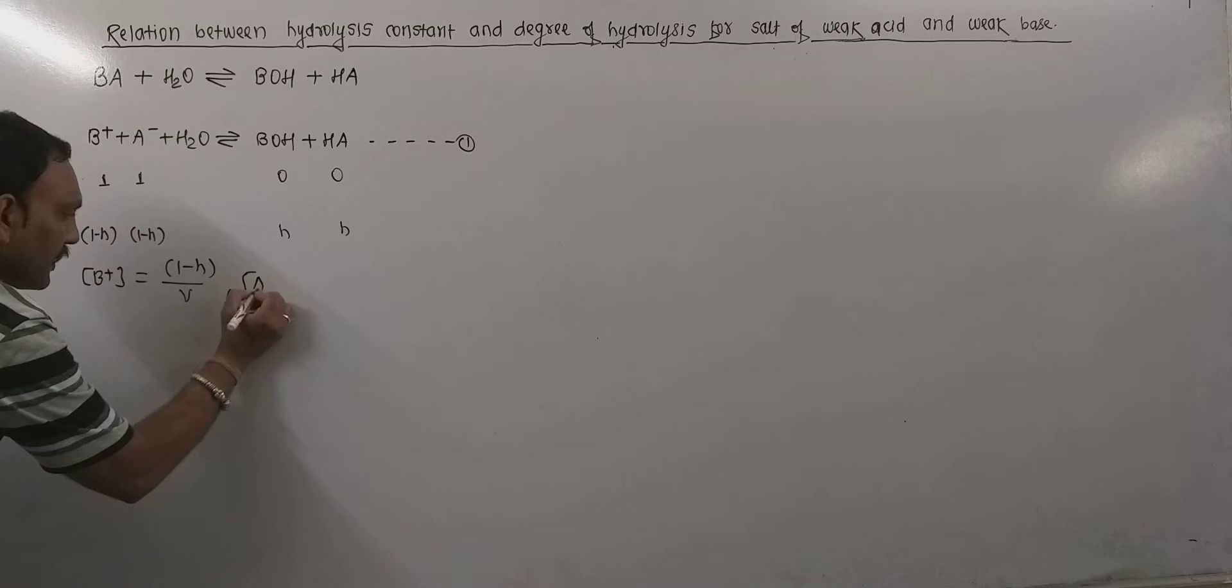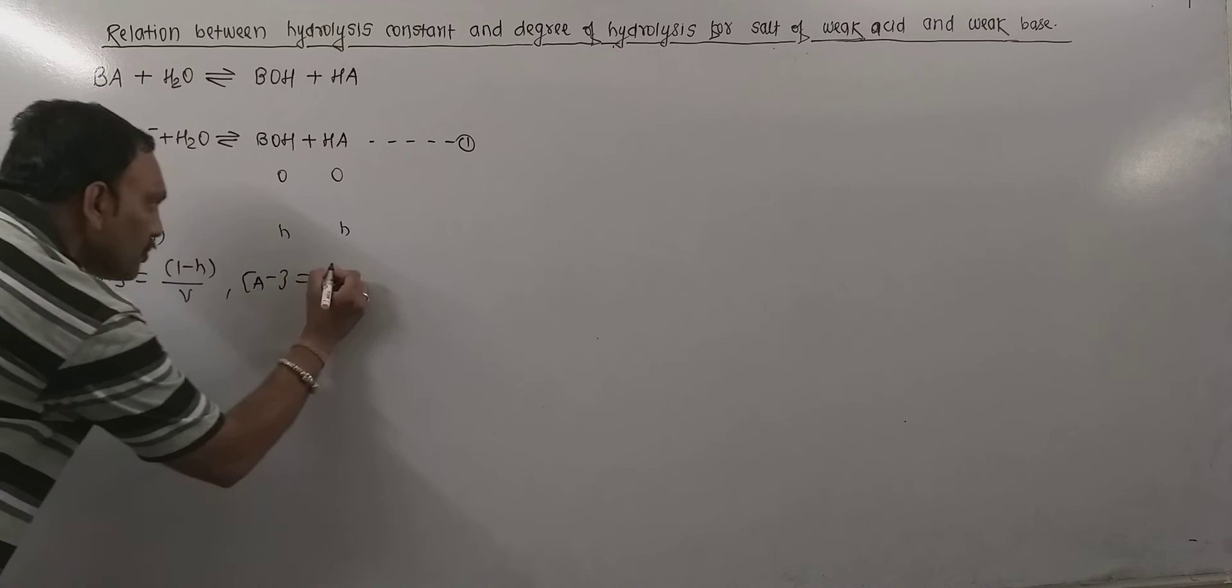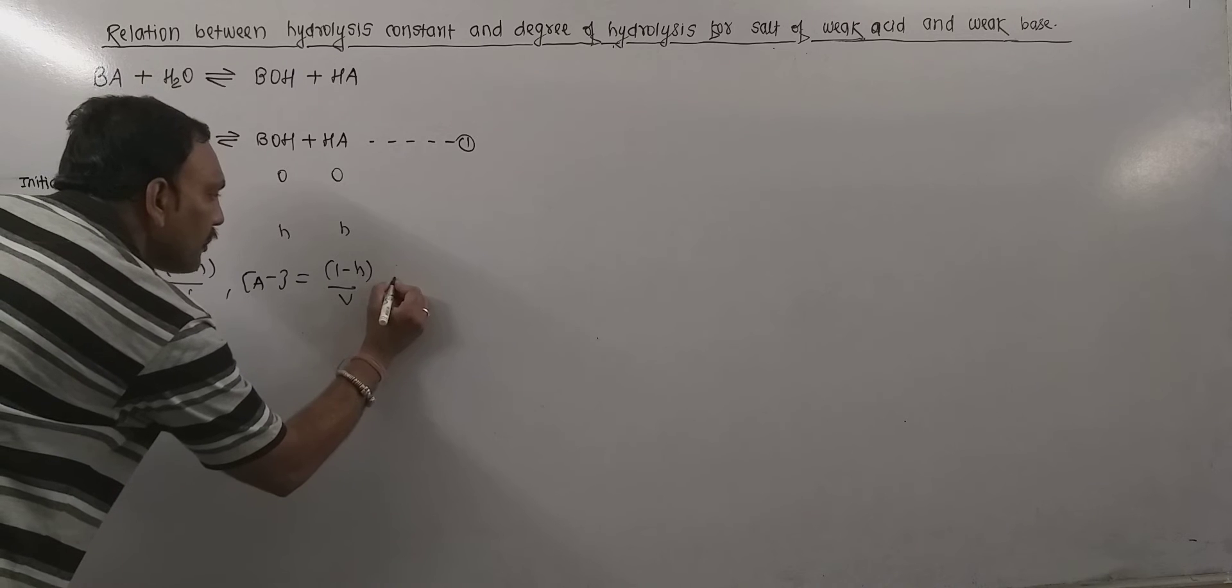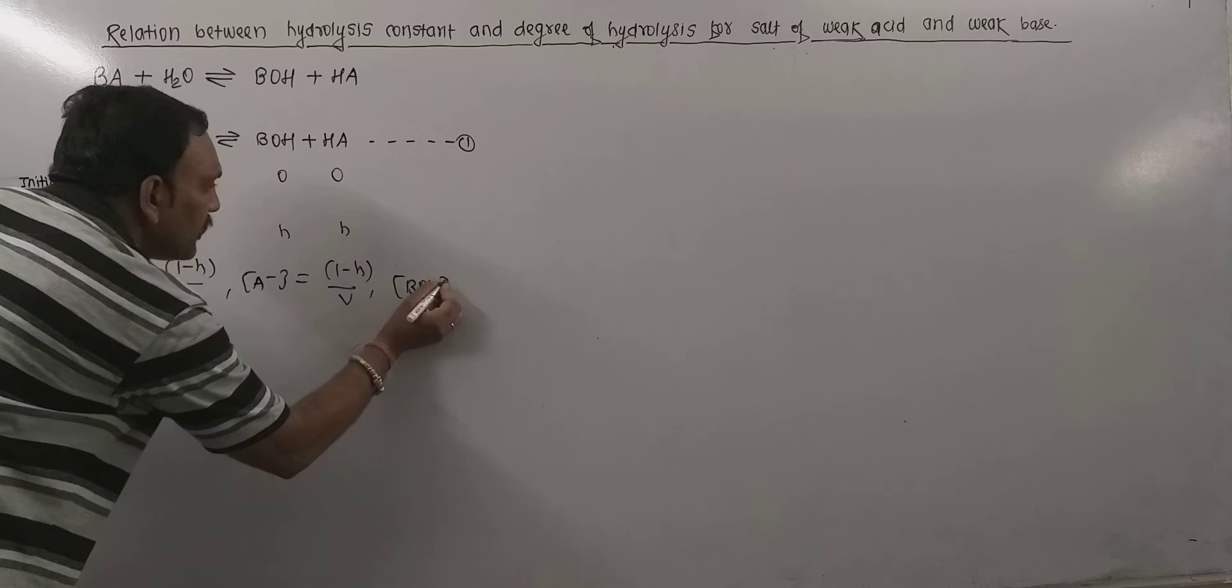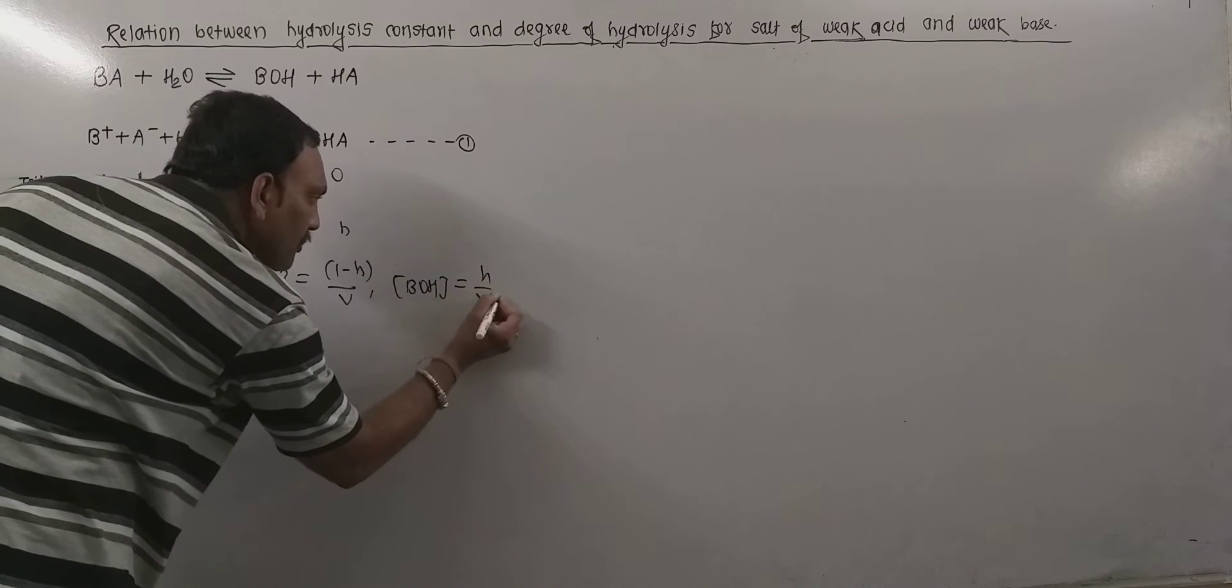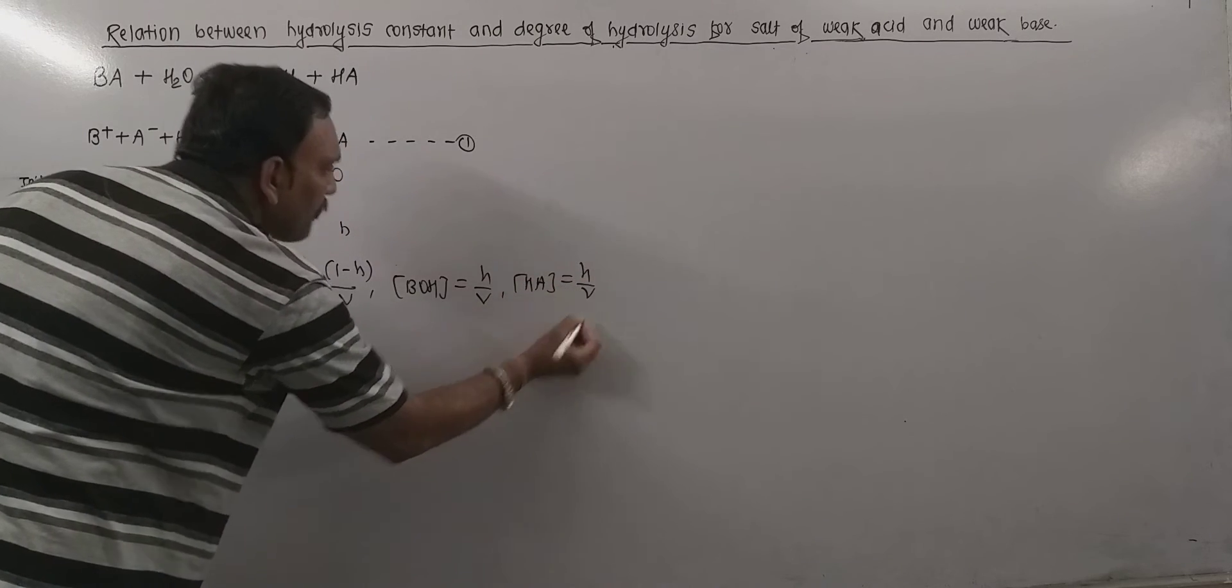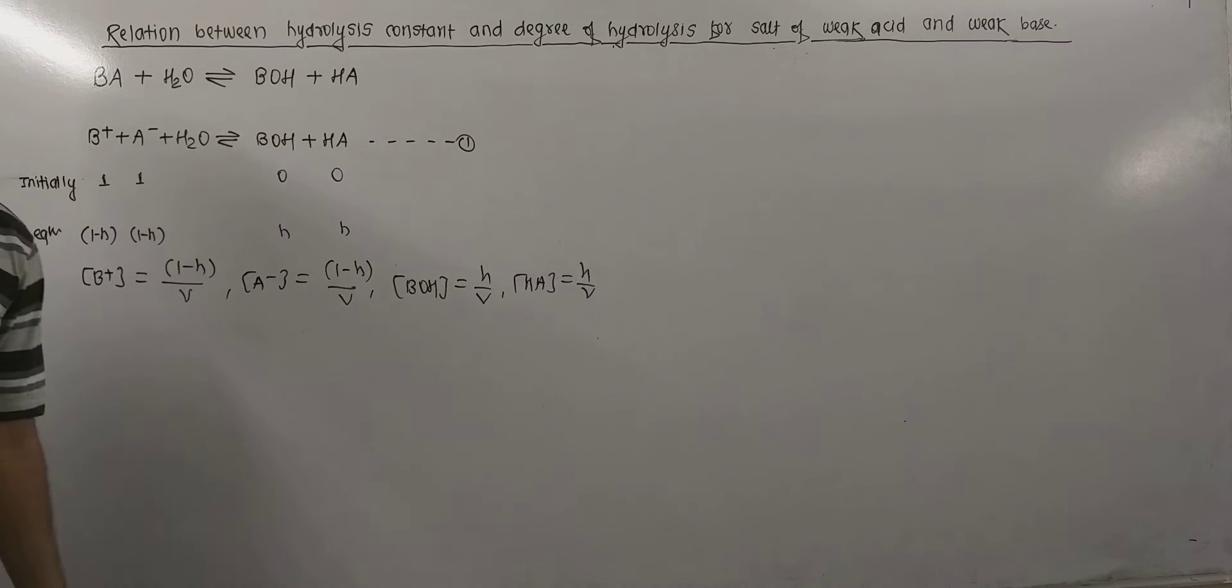Concentration of BOH equals H/V and concentration of HA will be equal to H/V, as all these ingredients are present in V liter of water. Now if law of mass action is applied to equation 1, then we get hydrolysis constant for this salt.